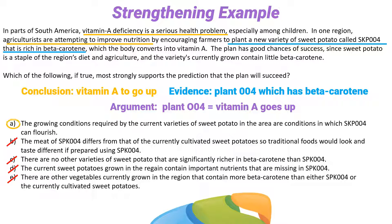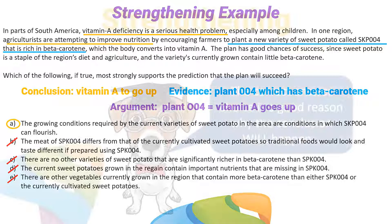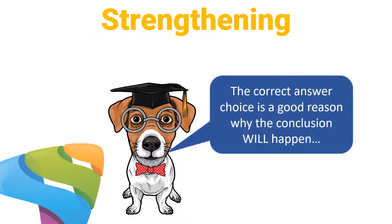So our answer is A. Remember: whenever you're being asked to strengthen an argument, you're looking for reasons why the conclusion will actually happen — why the prediction will come true, why the goal will be achieved, or why the plan will succeed. Just ask yourself which answer choice is going to make the conclusion more likely to actually happen.